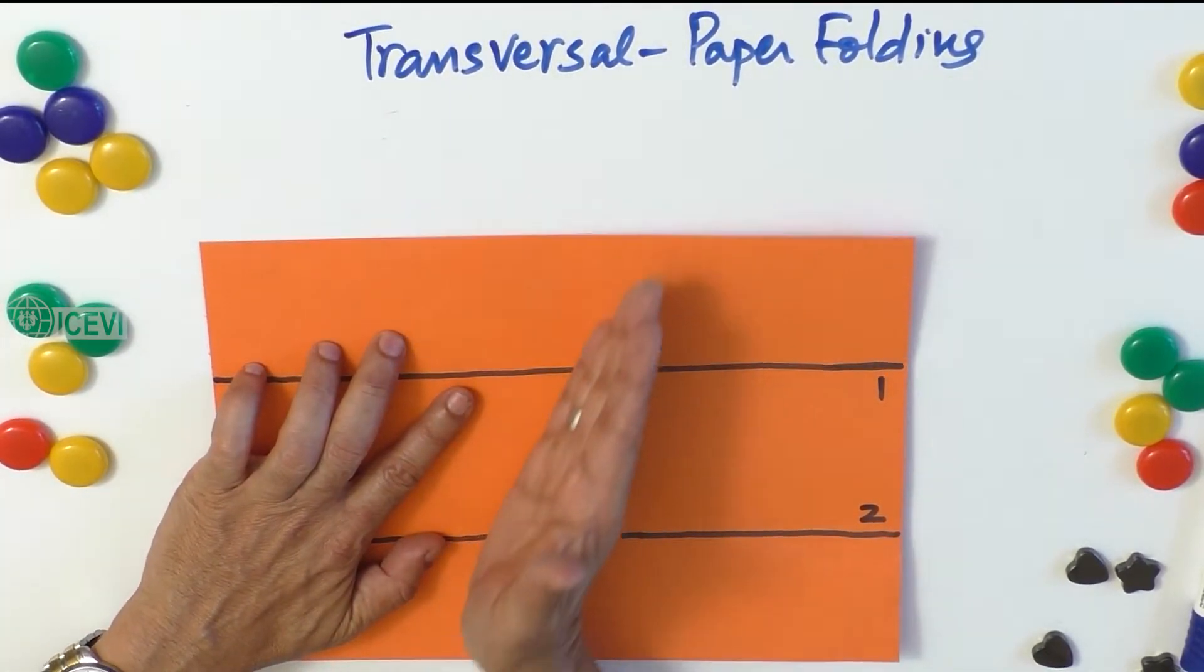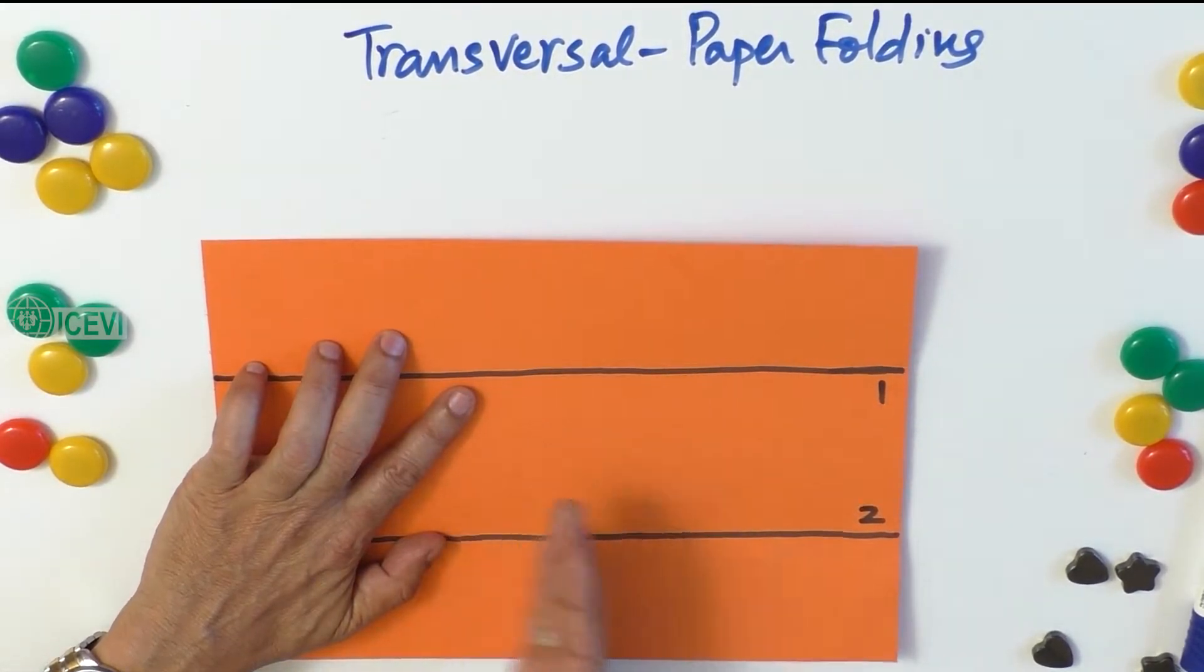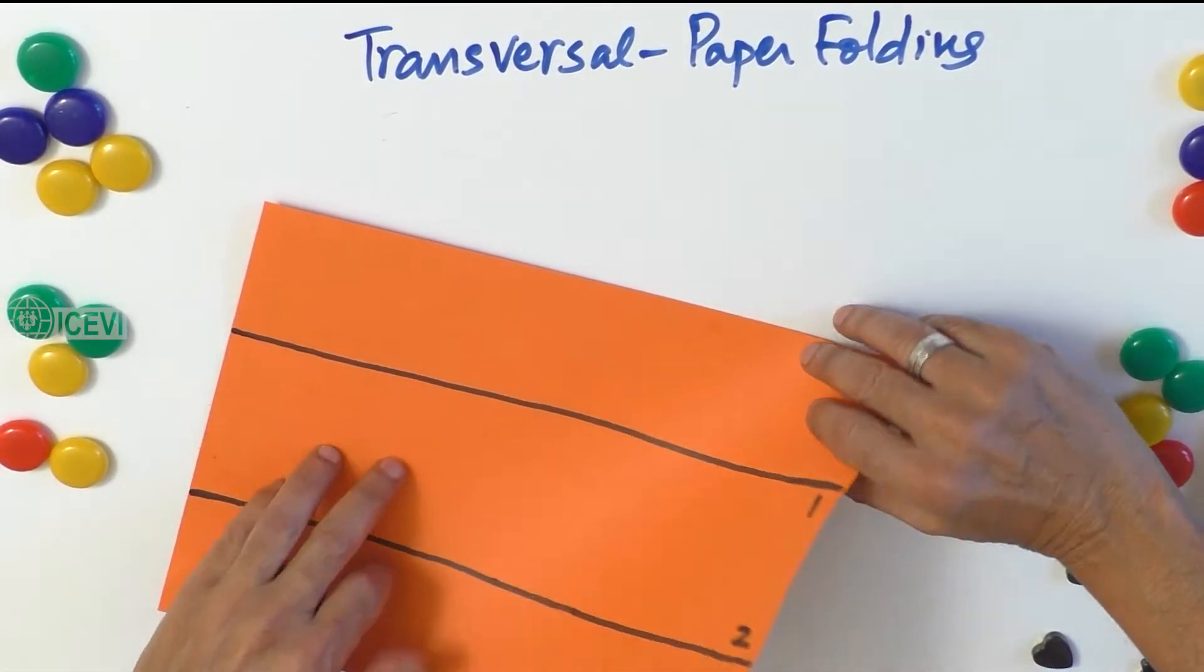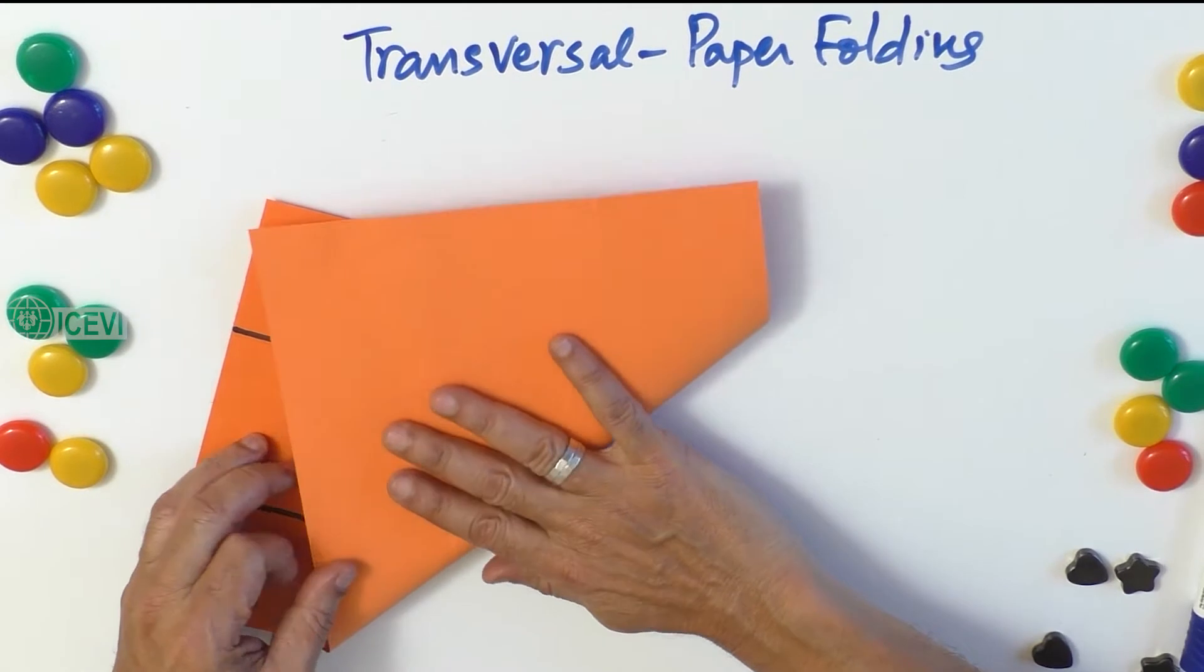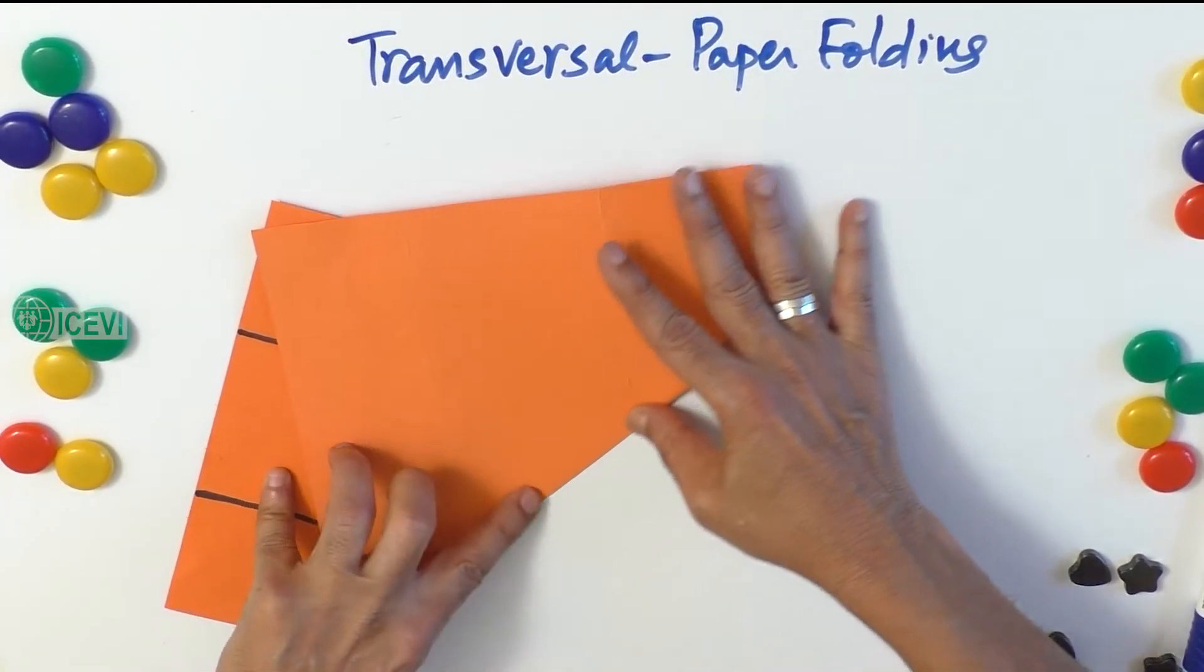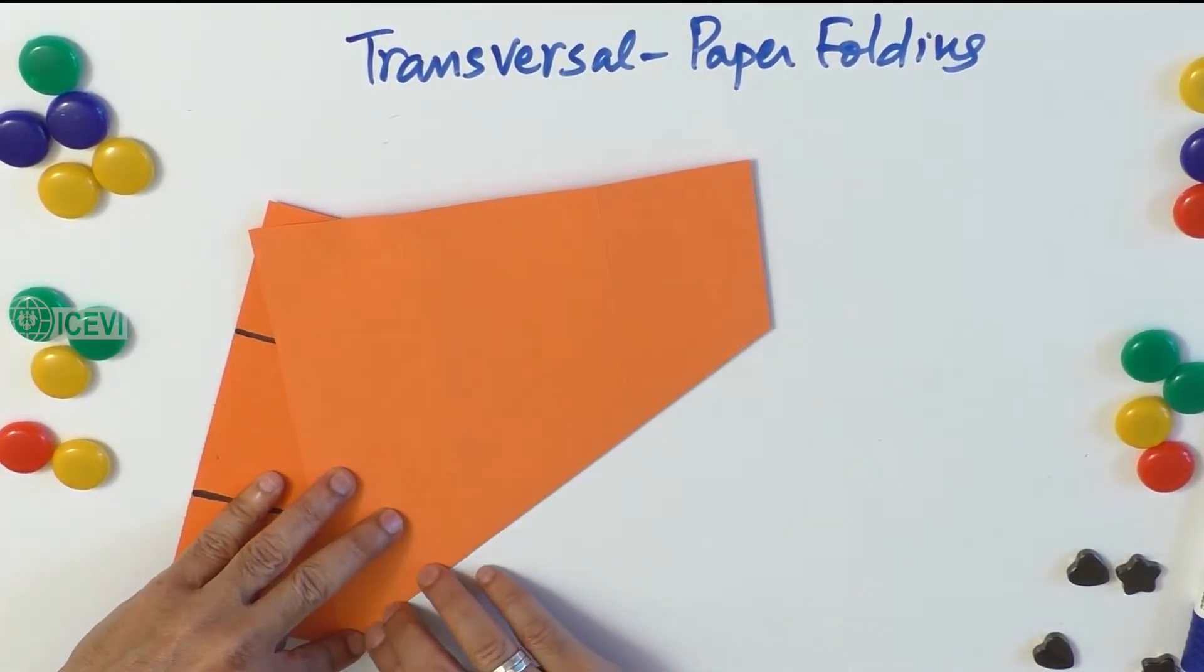So what we do? We simply fold the paper in the vertical side, but not in the perpendicular way.